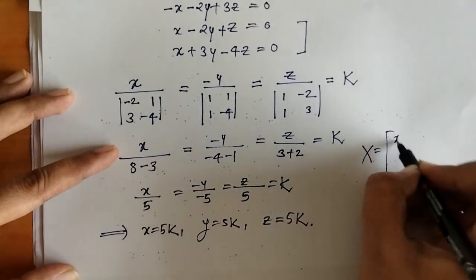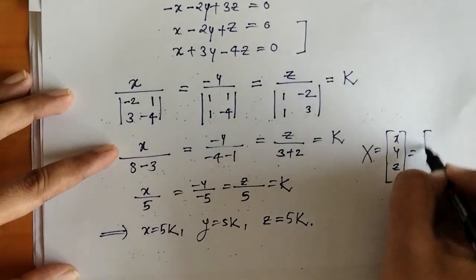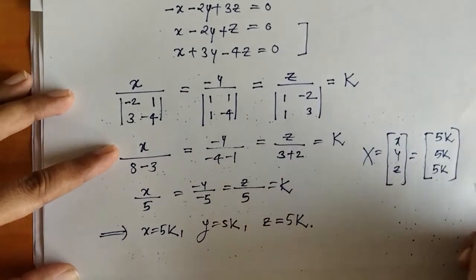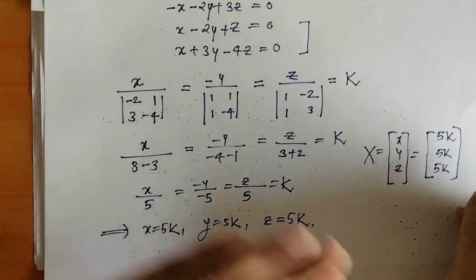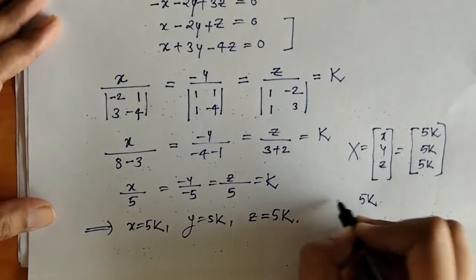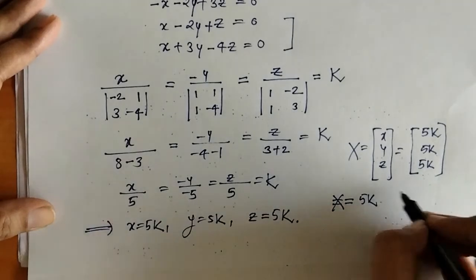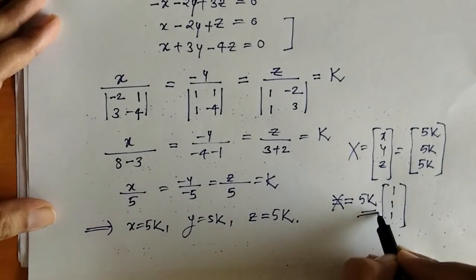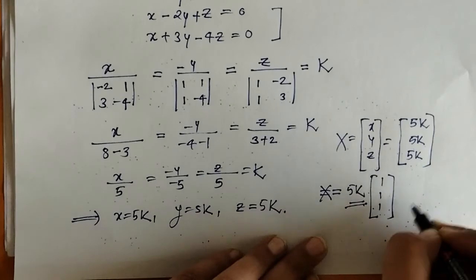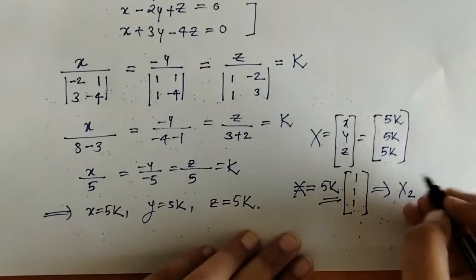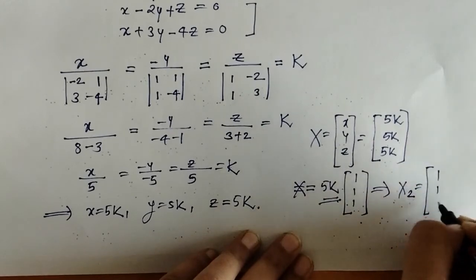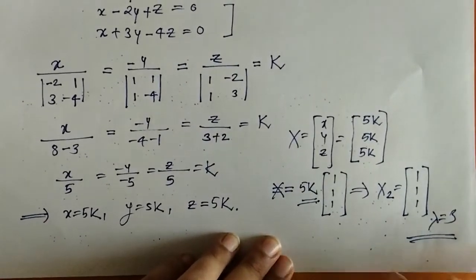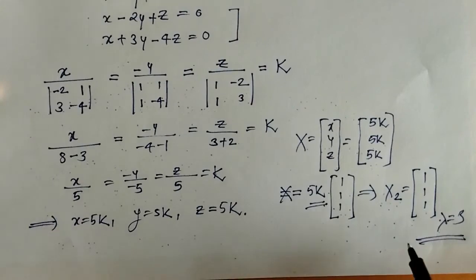Putting these values into the column vector and taking 5k outside, the second eigenvector X2 for lambda equals 3 is the vector [1, 1, 1].